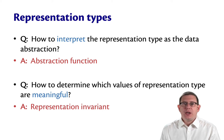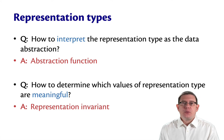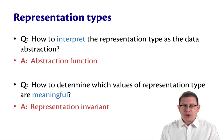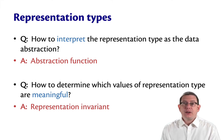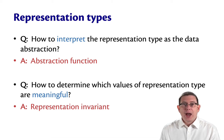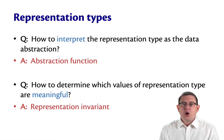As we were implementing our two data structures for the set data abstraction, there were two questions that we had to answer for each implementation: how to interpret the representation type as the data abstraction, and how to determine which values of the representation type are meaningful. There is a technical term for each of these. The first is called the abstraction function — it tells us how to interpret the representation type. The second is called the representation invariant — it tells us which values are meaningful.